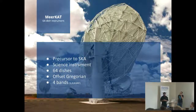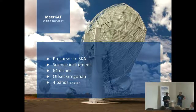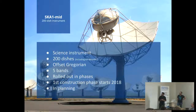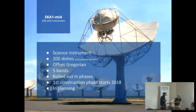MeerKAT is a 64-dish instrument and the precursor to SKA. MEER stands for 'more' — instead of calling it KAT-64, it's MeerKAT, also a play on the meerkats in that area. It's Offset Gregorian — think of your DSTV dishes. It has four bands: L, X, and UHF. What we're working towards is SKA-1-MID, a 200-dish instrument, also Offset Gregorian, with five bands, planned to roll out in phases. Construction starts in 2018, currently in the planning phase.